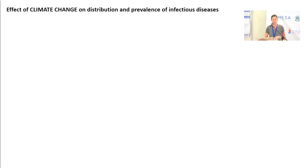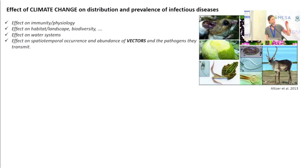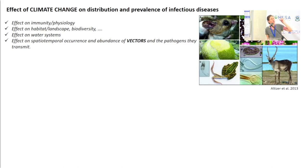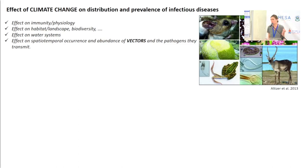Climate change can have an impact on diseases in different ways. It can directly affect immunity and physiology, not only of the hosts but also of the pathogen. Of course, climate change also has an impact on habitat and on biodiversity, which in turn impacts infectious diseases. On water systems, cholera has been shown to be a sensitive disease to climate change. Vector-borne diseases are clearly impacted by climate change because they are transmitted by mosquitoes, flies, and ticks, which are very sensitive to rainfall and temperature.